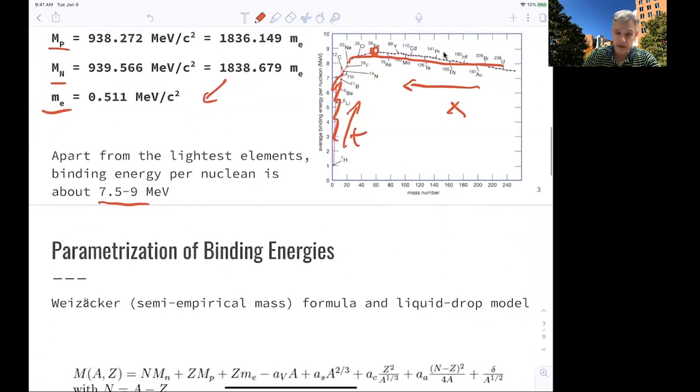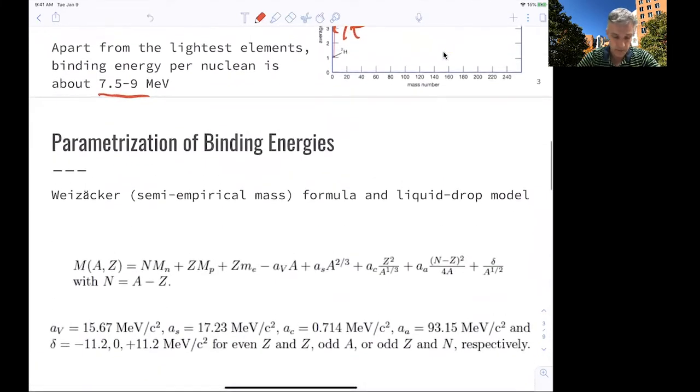This diagram here can be parameterized, and the rest of this video will talk about a very popular parameterization of the binding energy. So this is semi-empirical. It's called the Weizsäcker formula because it was proposed by a German called Weizsäcker. Sometimes it's called the semi-empirical mass formula, and sometimes the discussion is summarized as a liquid drop model. And you'll see why in a second.